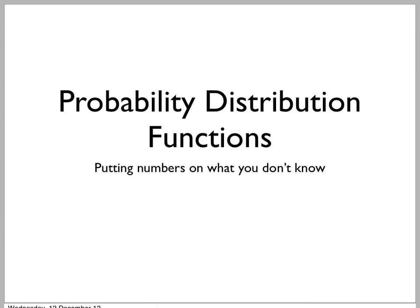How on earth can you put a number to uncertainty, to something that you don't know? Well, the answer is a probability distribution function, and that's what we're going to talk about in this video.